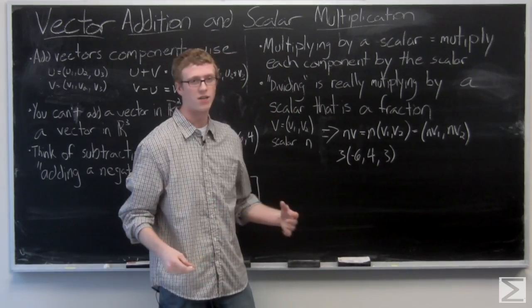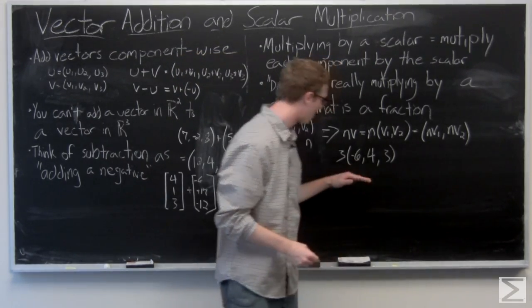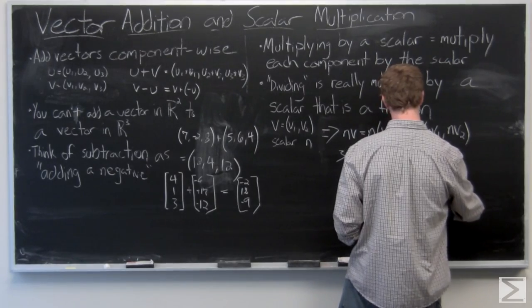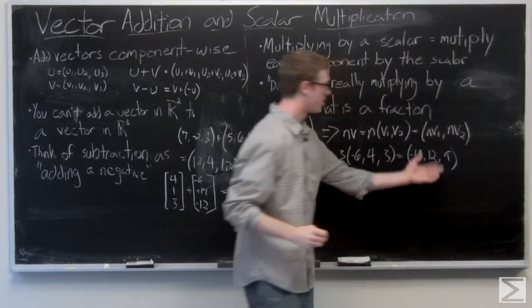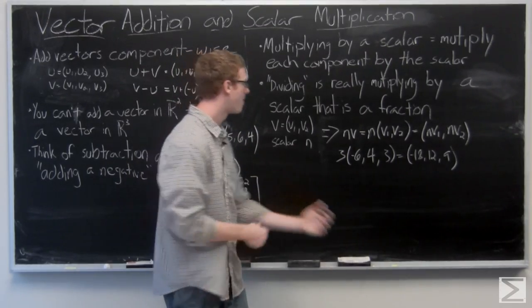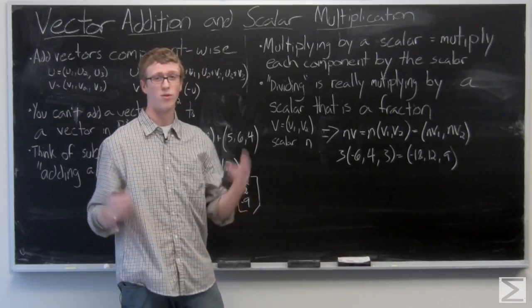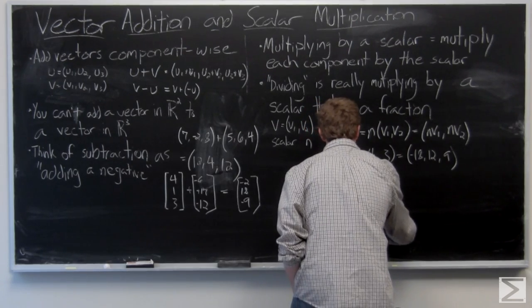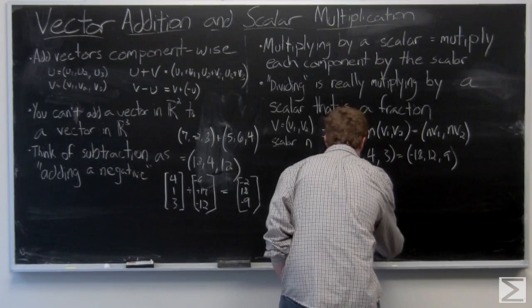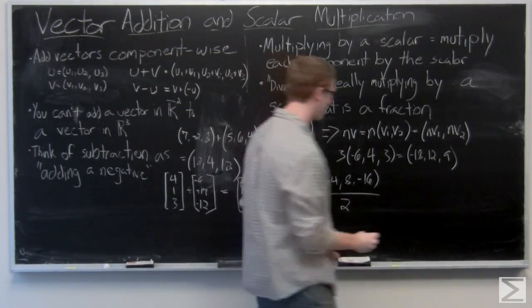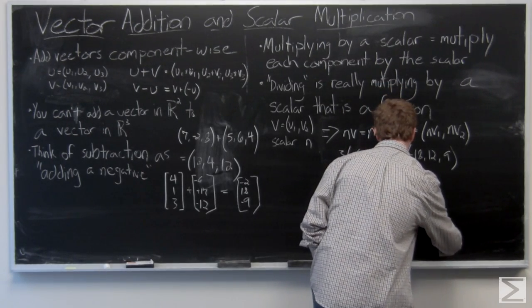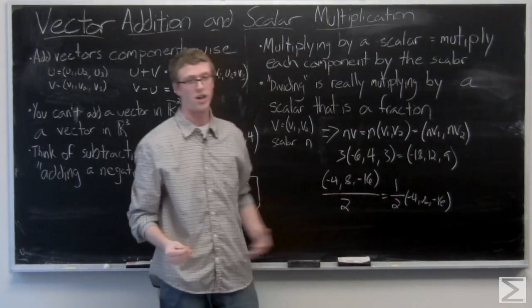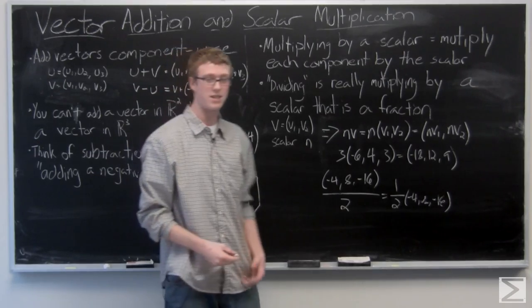So 3 times the vector (-6, 4, 3), just make sure you're multiplying 3 times -6, 3 times 4, and 3 times 3. You'll result in vector (-18, 12, 9). And now we can look at a quick example of what it would be to divide. The vector (-4, 8, -16) divided by 2. It's really just scalar 1/2 times (-4, 8, -16), and the result in vector is (-2, 4, -8).